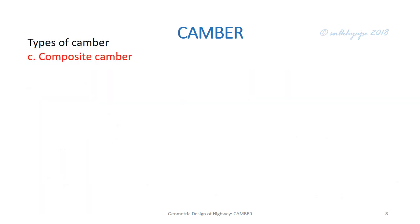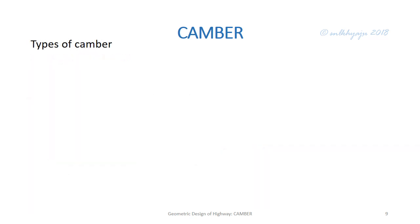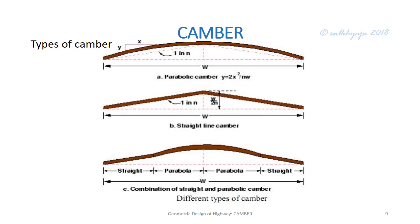The third type is composite camber. This may be a combination of partly straight line segments of different camber slopes — for example, two straight line sections where the center part has one slope and the outer edge has a different slope. Another composite camber may be partly parabolic at the center and straight line at the edge. Composite camber is used for slow-moving vehicles.